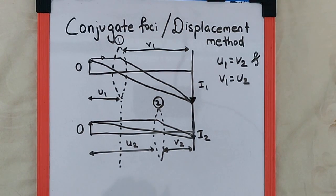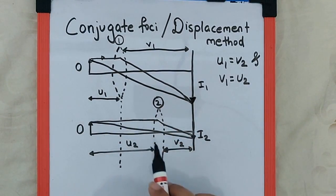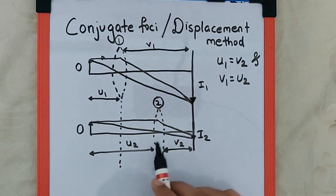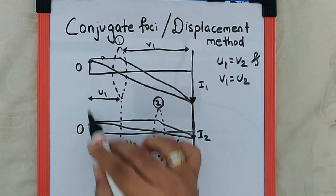And that is the basic idea of conjugate foci: the two positions of lens where we get the clear image on a screen which is at a fixed distance from the object.